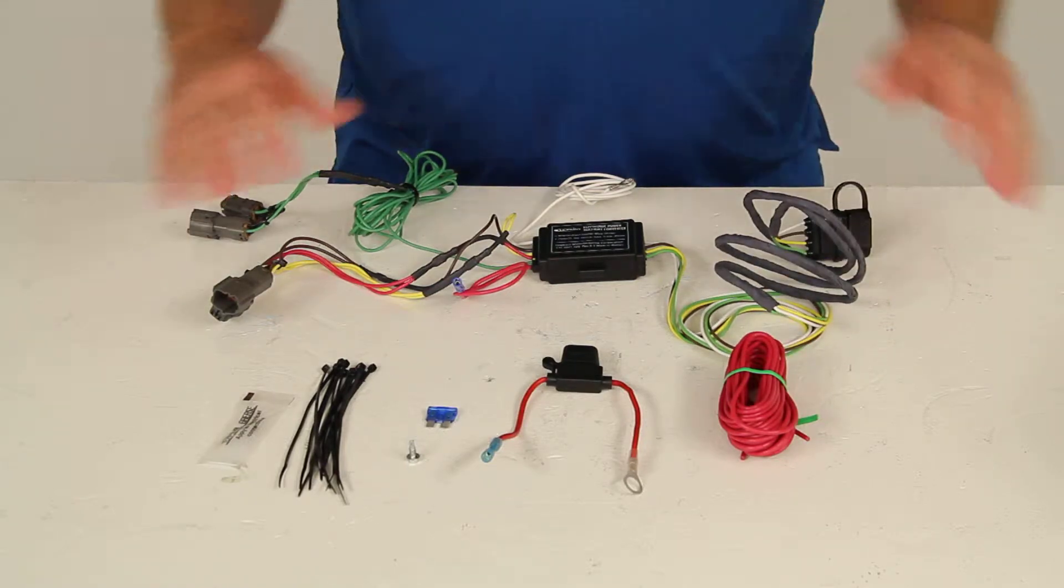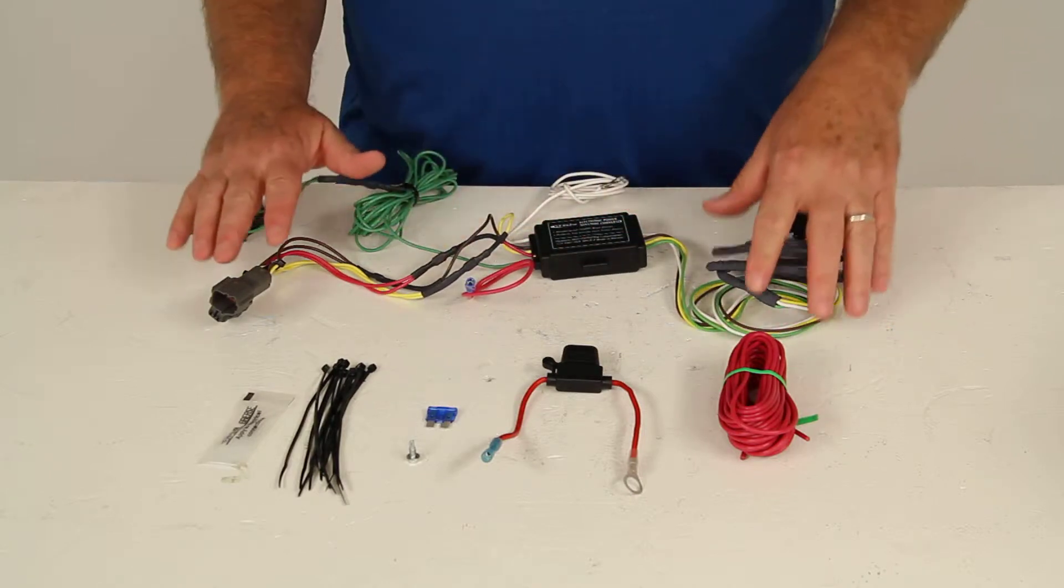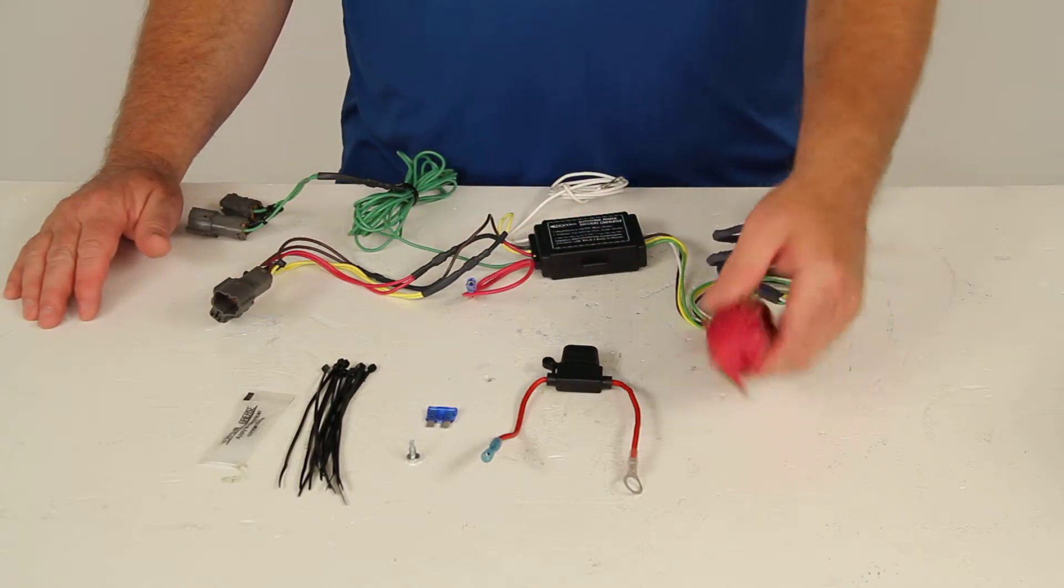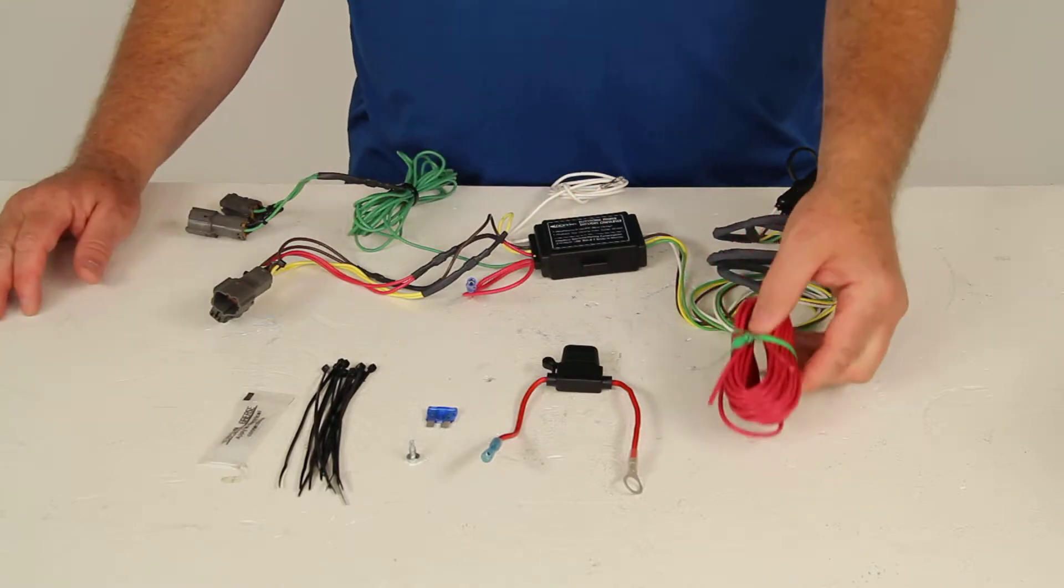Now this part does come with everything shown here on the table. Comes with the power converter module and all the wiring attached to it. Comes with an extra length of 14 gauge wire to run the wire from the module up to your battery.